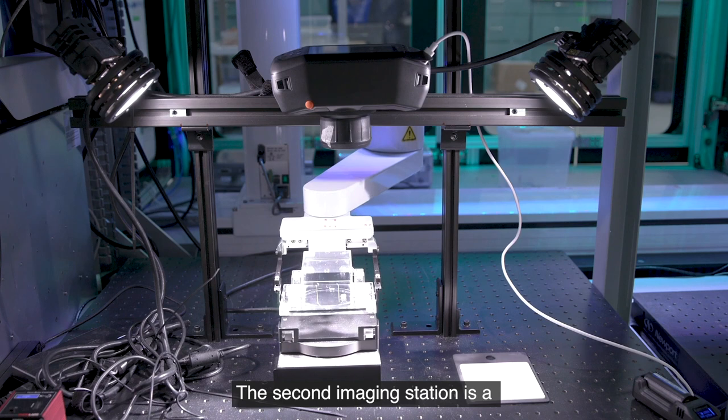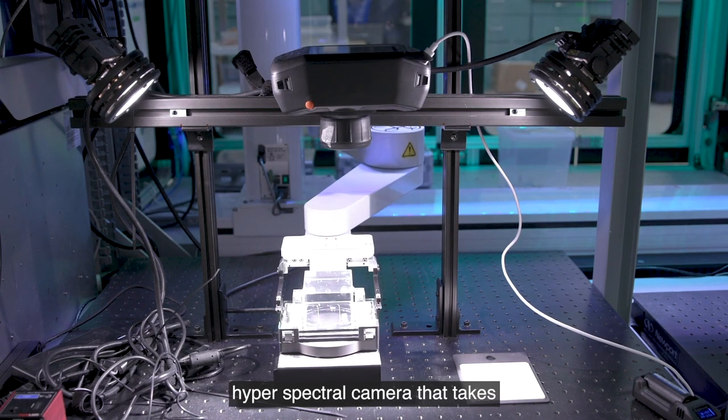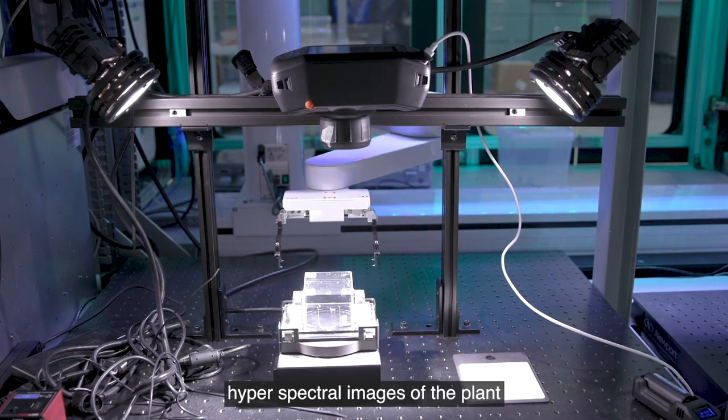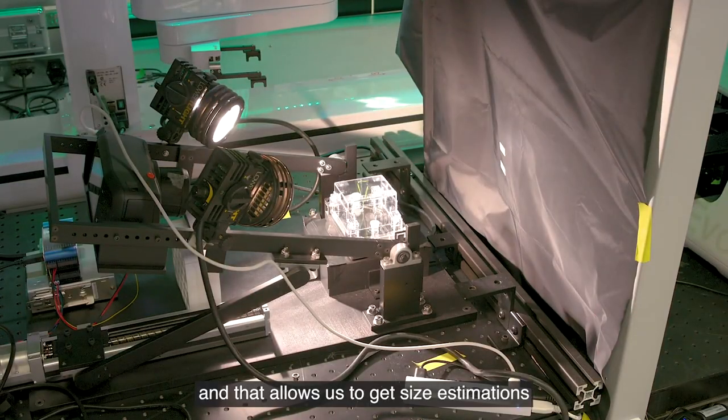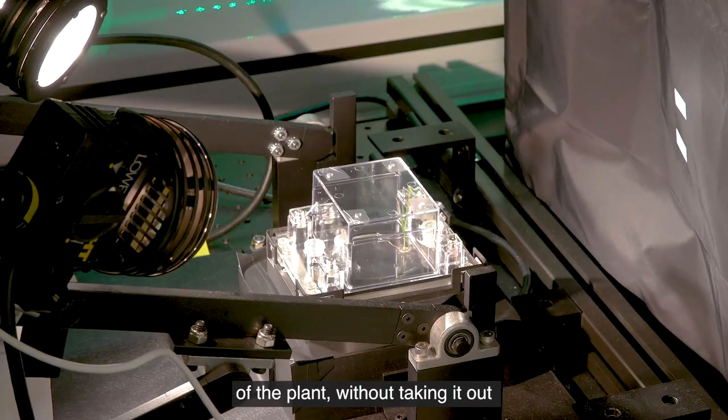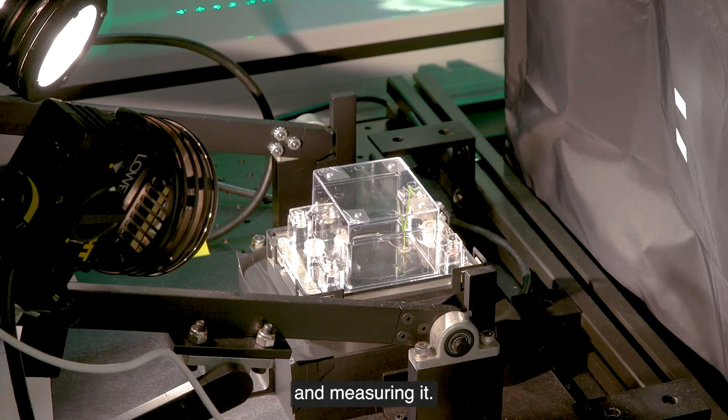The second imaging station is a hyperspectral camera that takes hyperspectral images of the plant from three different angles, and that allows us to get size estimations on the plant without taking it out and measuring it.